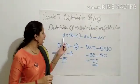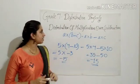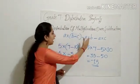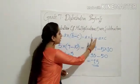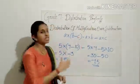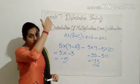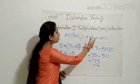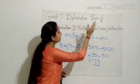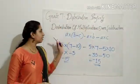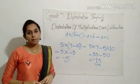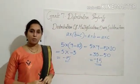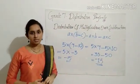We can conclude that multiplication distributes over subtraction. A into B minus C is equal to A into B minus A into C. Remember the vice versa also: A into B minus A into C is equal to A into B minus C. Let us look at some more examples.